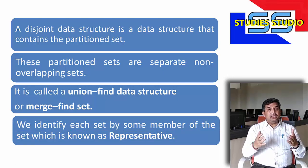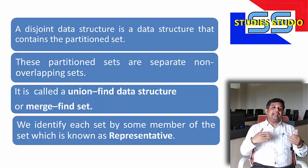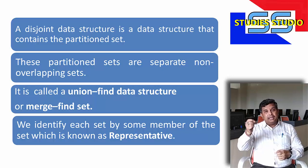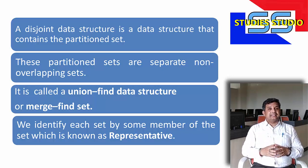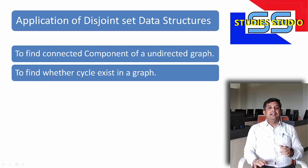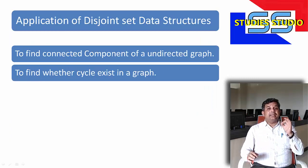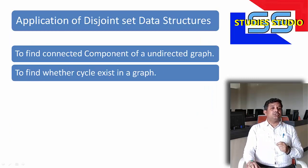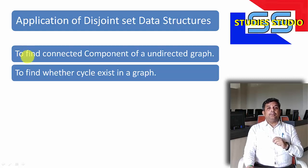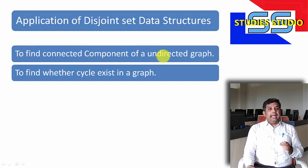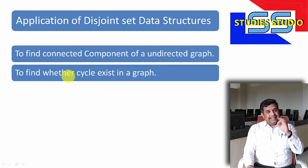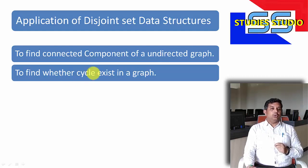You can see in your class there is a class representative, and through that I can identify each of the members in the class. The basic application of this disjoint set data structure is to find a connected component of an undirected graph and to find whether a cycle exists in a graph or not.